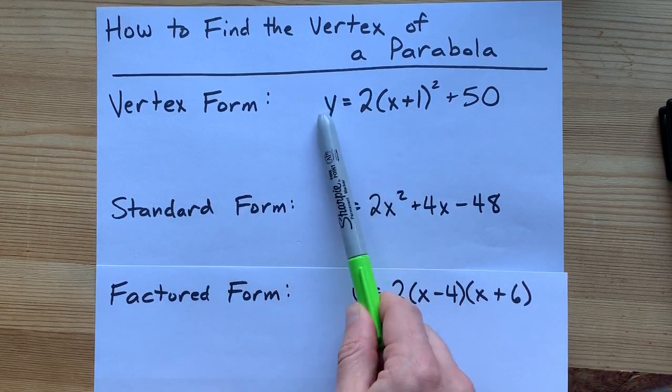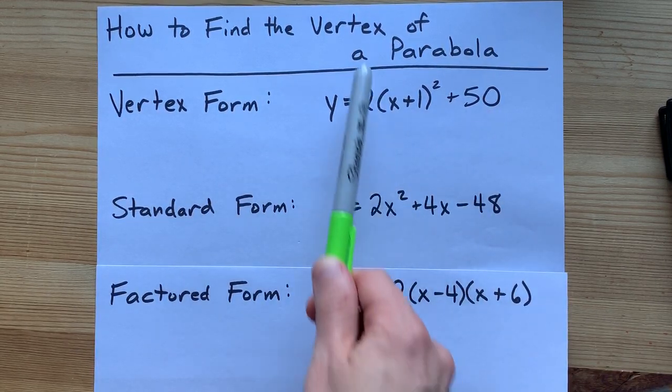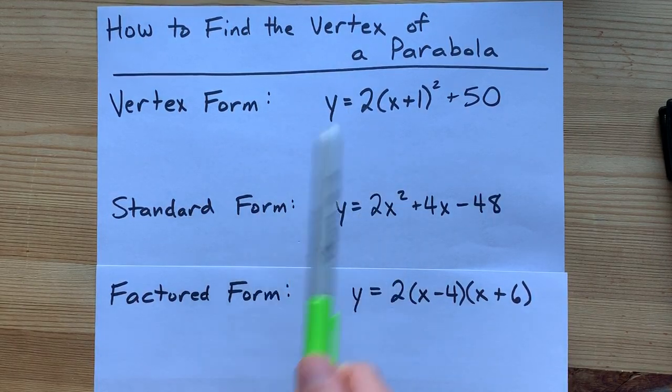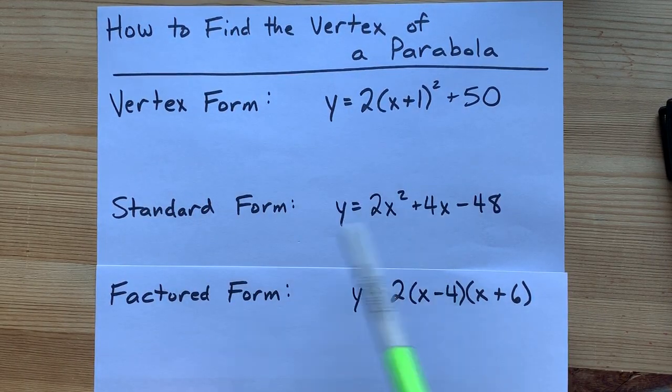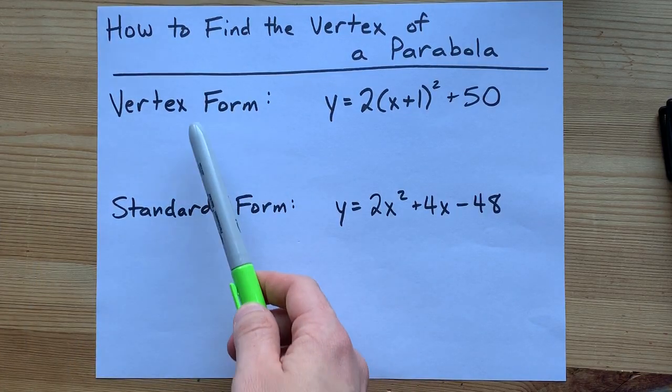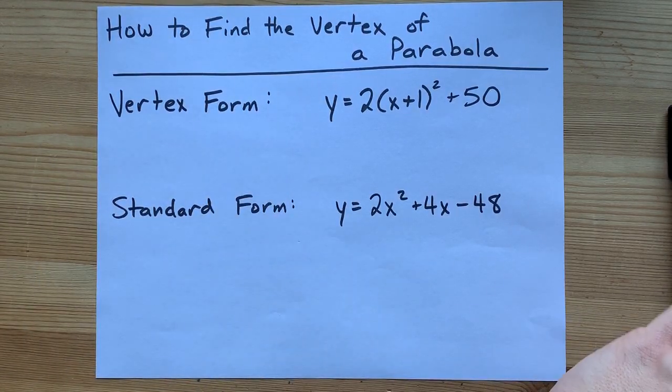You'll have to be able to identify which of these types you have before you find the vertex, because the method to find the vertex depends on which one you have. For example, if you have vertex form, I have a treat for you.